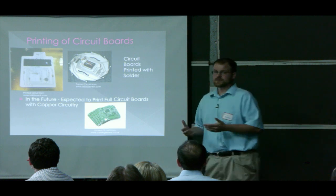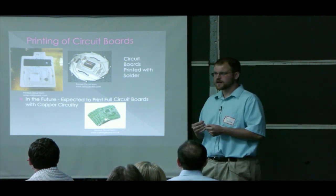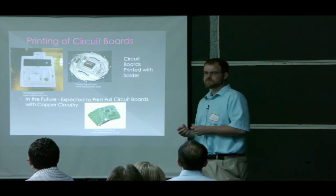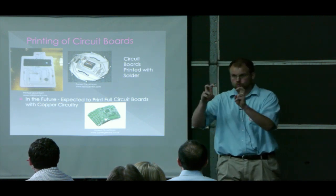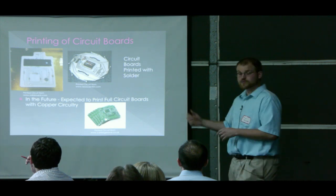We can print circuit boards. Right now we can print plastic backing and make all the circuit connections by printing the solder. In the near future, we fully expect to be able to print real circuit boards out of silicone and copper, much like the ones we see now.